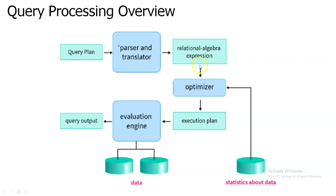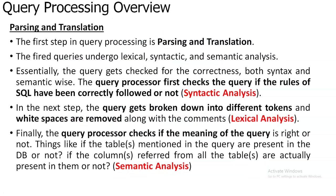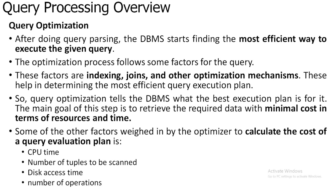The next part of query processing is the optimizer phase. The optimizer checks for the most efficient way to execute the given expression — it finds the minimum cost needed for retrieving the data. The factors considered for calculating the cost of query evaluation are: CPU time, number of tuples to be scanned, disk access time, and number of operations to be done. Using these factors, the minimum cost plan is determined.